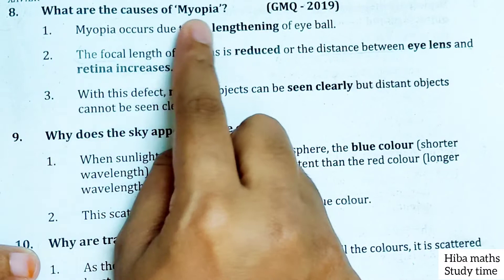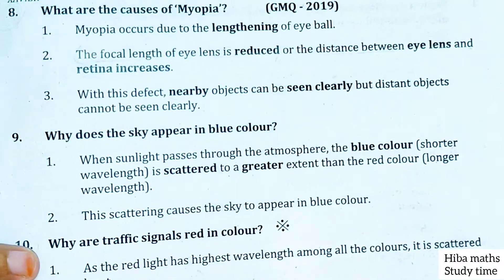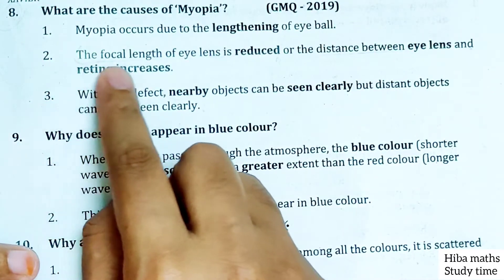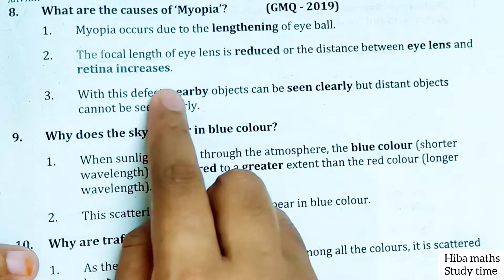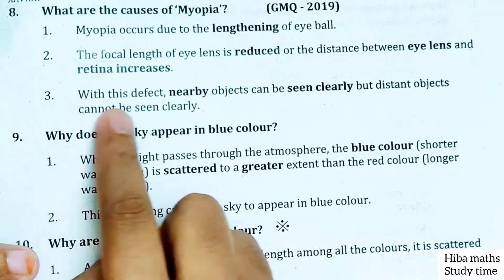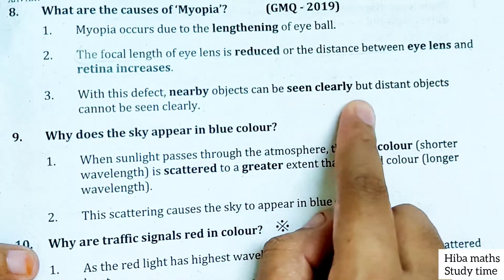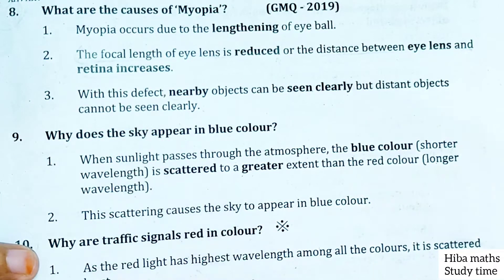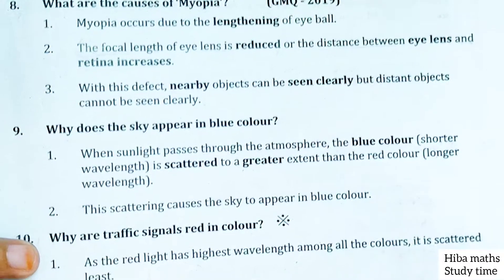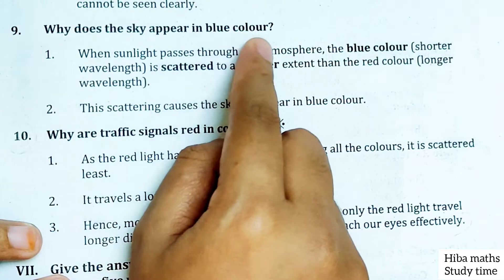What are the causes of myopia? Myopia occurs due to the lengthening of eyeball. The focal length of eye lens is reduced or distance between the eye lens and the retina increases. With this defect, nearby objects can be seen clearly but distant objects cannot be seen clearly.